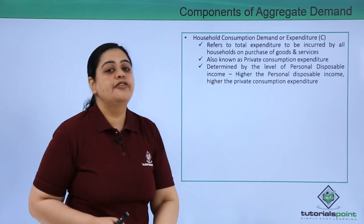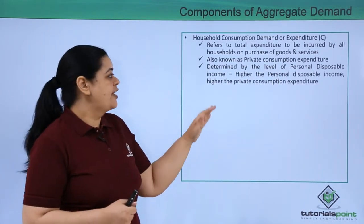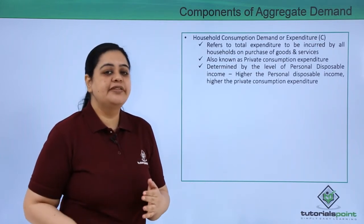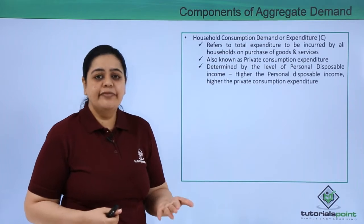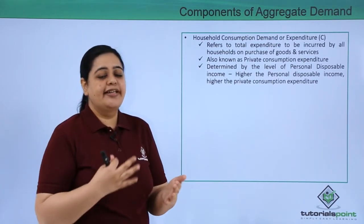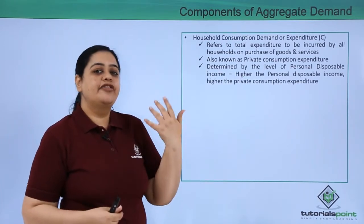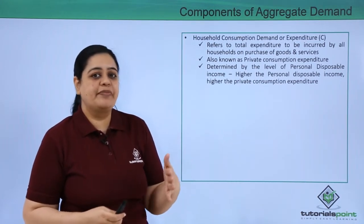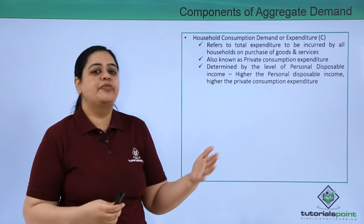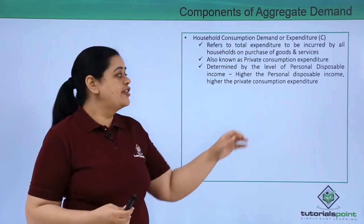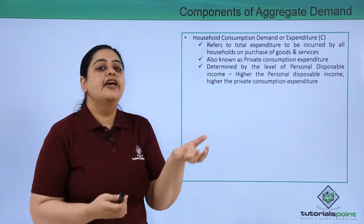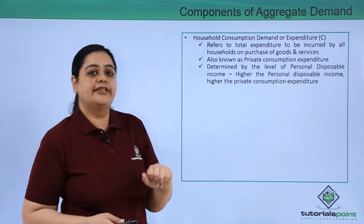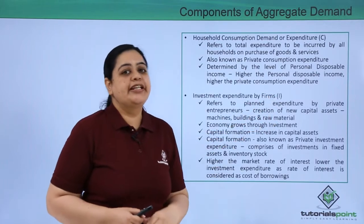Household consumption demand is determined by the level of personal disposable income. If personal disposable income is high, consumption expenditure would be high. Personal disposable income is the income available in your hands to spend. Once you receive your salary, certain taxes are paid and there may be compulsory deductions like PPF deposits. The net amount left with you after these deductions is your personal disposable income — how much money you can actually spend.